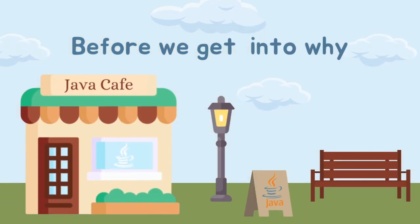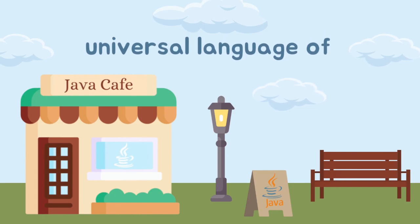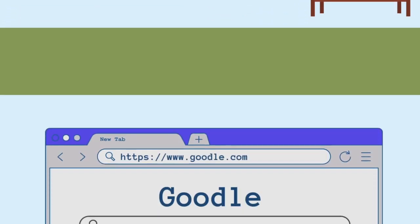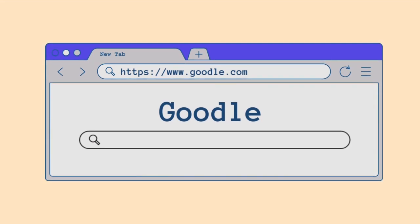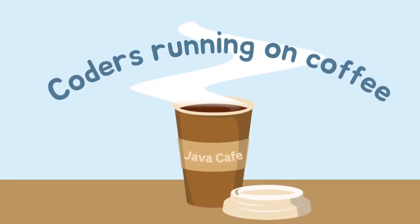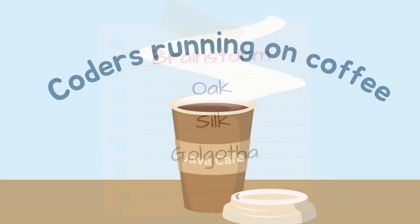Before we get into why Java is revered as a universal language of programming, let's answer the question you've probably wondered but never cared enough to look up: why is Java named after coffee? There are multiple different accounts of how the name got picked, but simply put, the Java development team had consumed a lot of coffee during production, so they pitched the name Java as part of a long list of other names. Since the name Java wasn't trademarked like the other options, they ran with it.